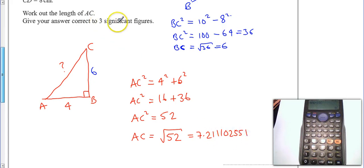It wants it to 3 significant figures. So I take the first three digits. Check for rounding. There is none. 7.21.